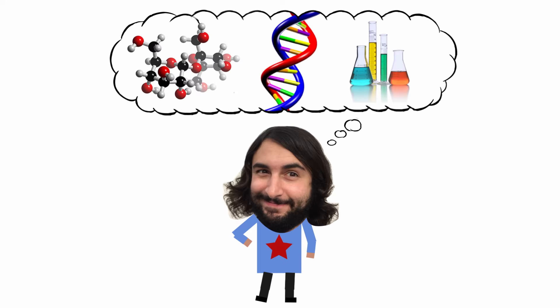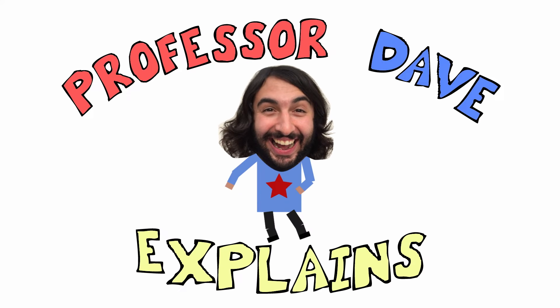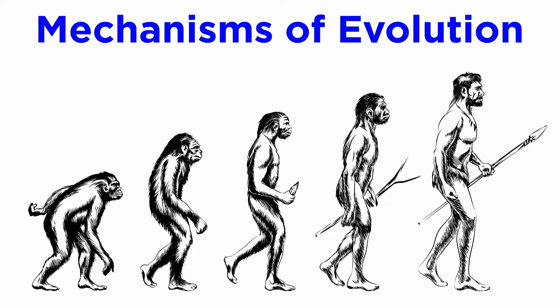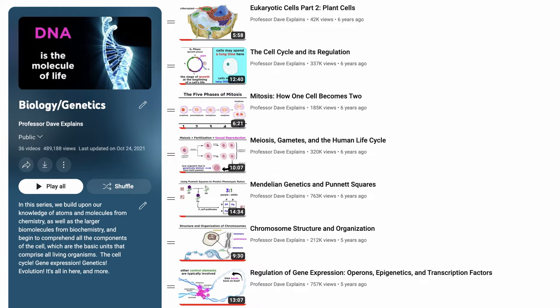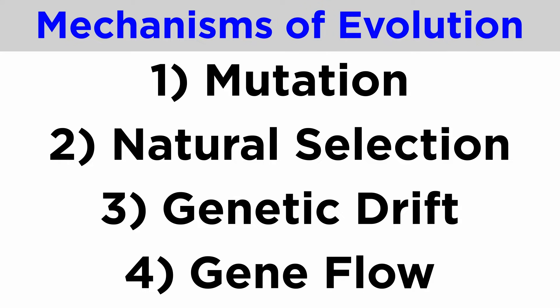He knows a lot about the science stuff, Professor Dave Explains. Understanding the mechanisms of evolution is imperative for understanding how and why organisms change over time. Much of the basics regarding this topic have been covered in the biology and genetics playlist linked below, so if this is completely new territory, that will be useful in getting up to speed, as much of that knowledge will be assumed in this series. In this tutorial, we will discuss the four primary mechanisms of evolution in relation to some specific examples in order to explain how large-scale changes to organisms can occur.